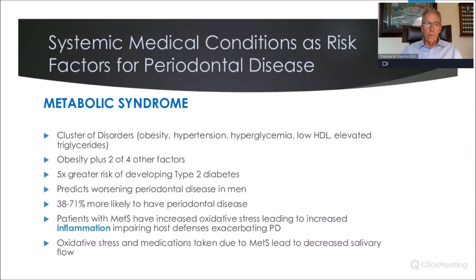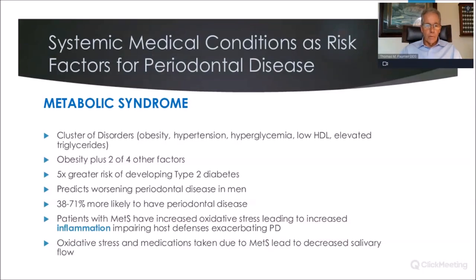Metabolic syndrome is a cluster of disorders: obesity plus two of four other factors — either hypertension, hyperglycemia, low HDL, or elevated triglycerides. If diagnosed with metabolic syndrome, you're five times more likely to develop type 2 diabetes. It also predicts worsening periodontal disease in men — 38 to 71% more likely to have periodontal disease if you have metabolic syndrome. Patients with metabolic syndrome have increased oxidative stress leading to increased inflammation and more cytokines in the bloodstream, which can exacerbate periodontal disease. Oxidative stress and the medications patients take also lead to decreased salivary flow and xerostomia, increasing risk of caries and periodontal disease.